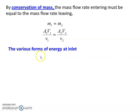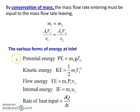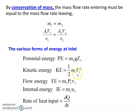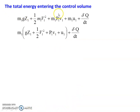Now we derive the energy equation. Various forms of energy at inlet entering the system: potential energy M1 G Z1, kinetic energy half M1 V1 squared, flow energy M1 P1 V1, internal energy M1 U1, and rate of heat input del Q by DT. The total energy entering the control volume is M1 into (G Z1 plus half V1 squared plus P1 V1 plus U1) plus del Q by DT.